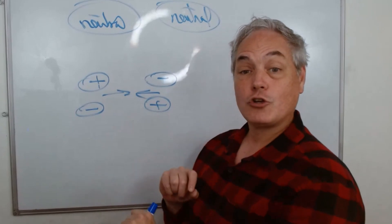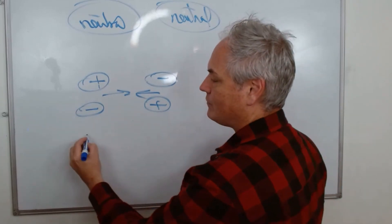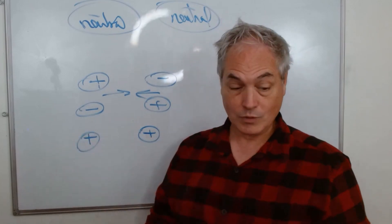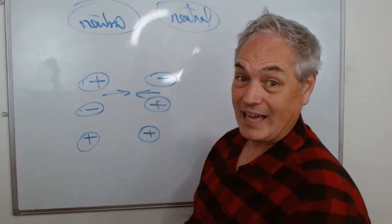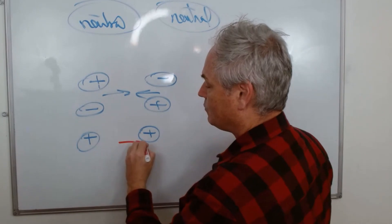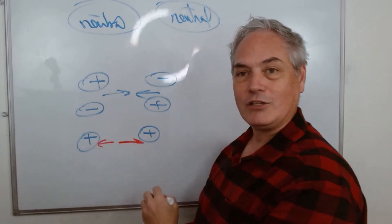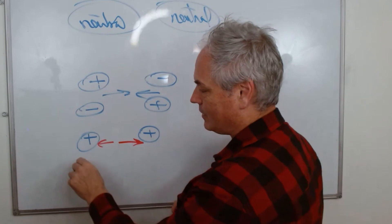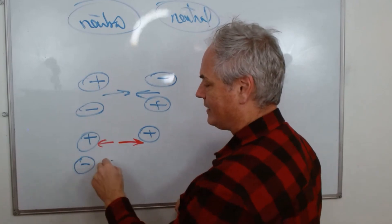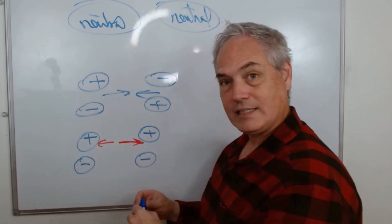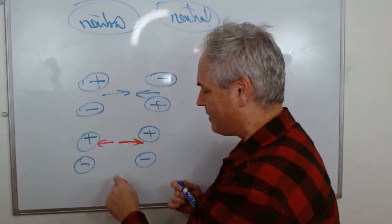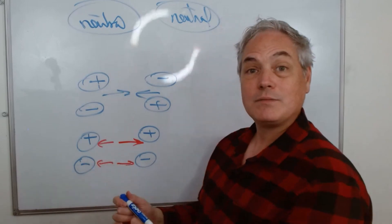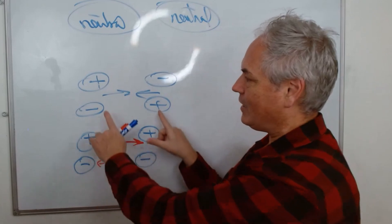Now, what happens if the charges are the same? If you have a positive charge and another positive charge, they will repel each other. Similarly, if you have two negative charges, they will also repel. Same charges always repel.